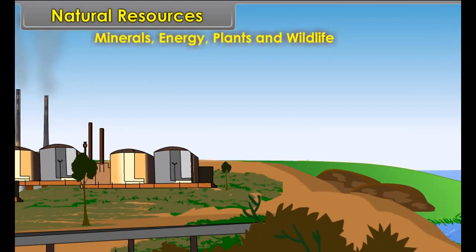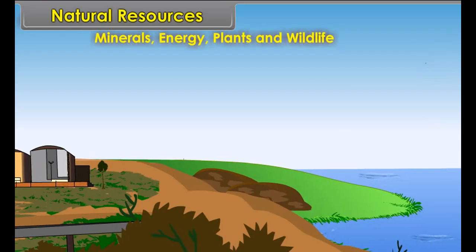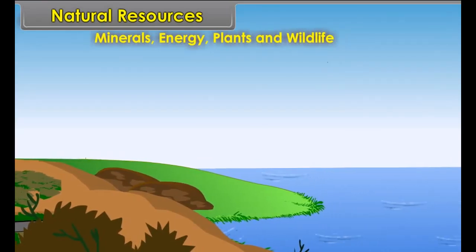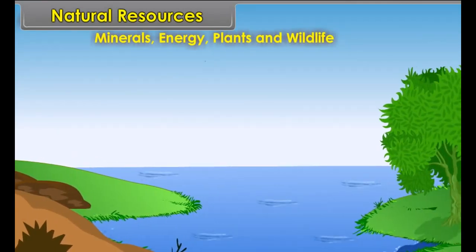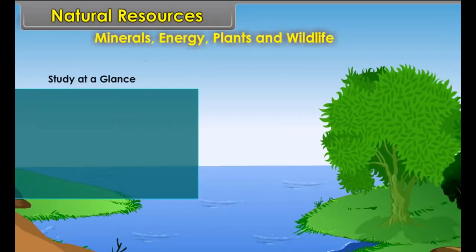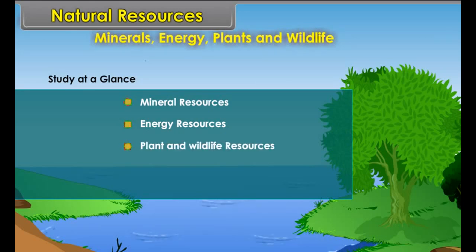The natural growth of all types of plant life is termed as natural vegetation. The vegetation of different parts of the world is affected by the amount of sunlight and the amount of rainfall. Study at a glance: Mineral Resources, Energy Resources, Plant and Wildlife Resources, Forest Types and Wildlife Resources.